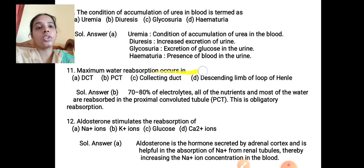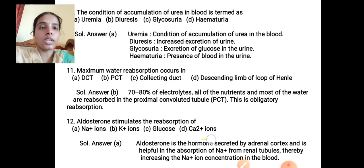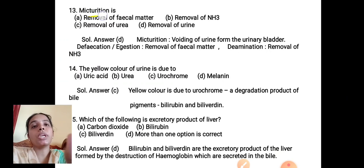MCQ 11: Maximum water reabsorption occurs in the proximal convoluted tubule (PCT), where 70 to 80 percent of electrolytes, nutrients, and most water are reabsorbed — this is obligatory reabsorption. Correct answer is option B, PCT. MCQ 12: Aldosterone stimulates the reabsorption of Na⁺ ions. Aldosterone is a hormone secreted by the adrenal cortex and is helpful in reabsorption of Na⁺ from the renal tubules, increasing Na⁺ ion concentration in the blood. Correct answer is option A, Na⁺ ions.